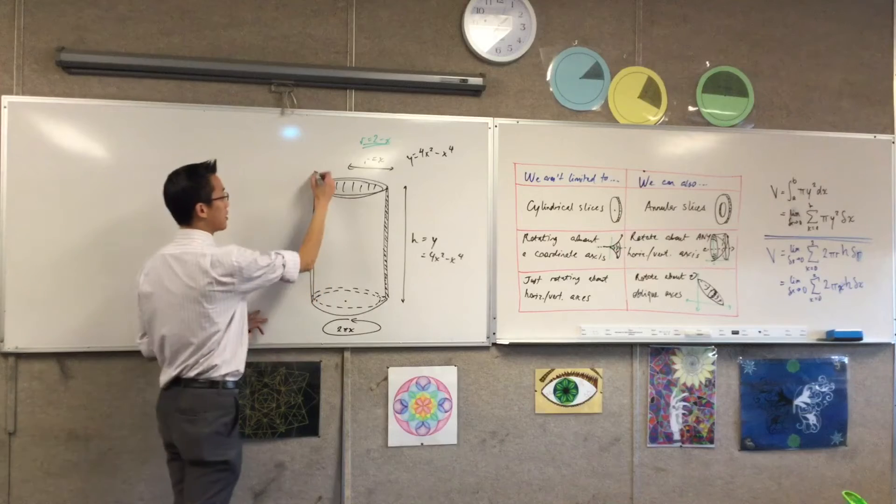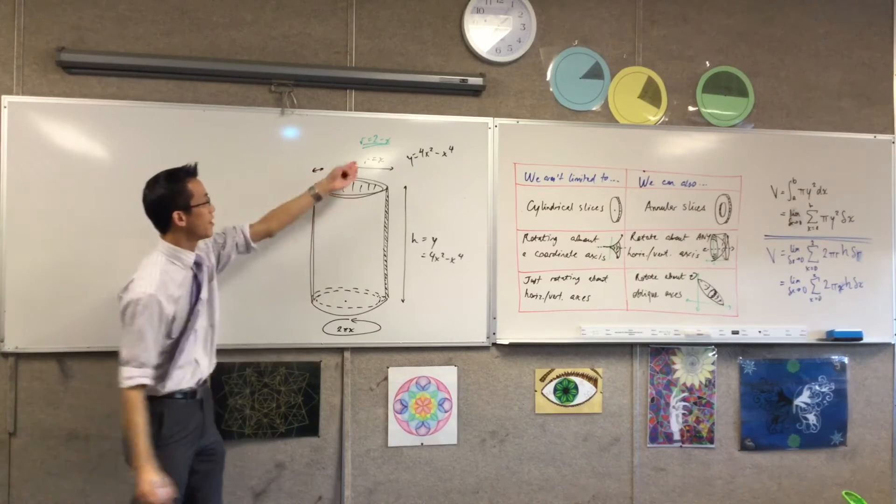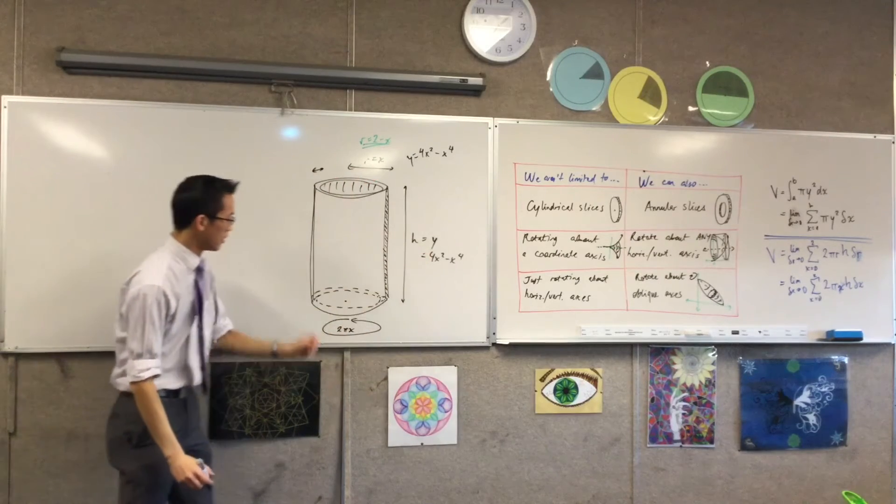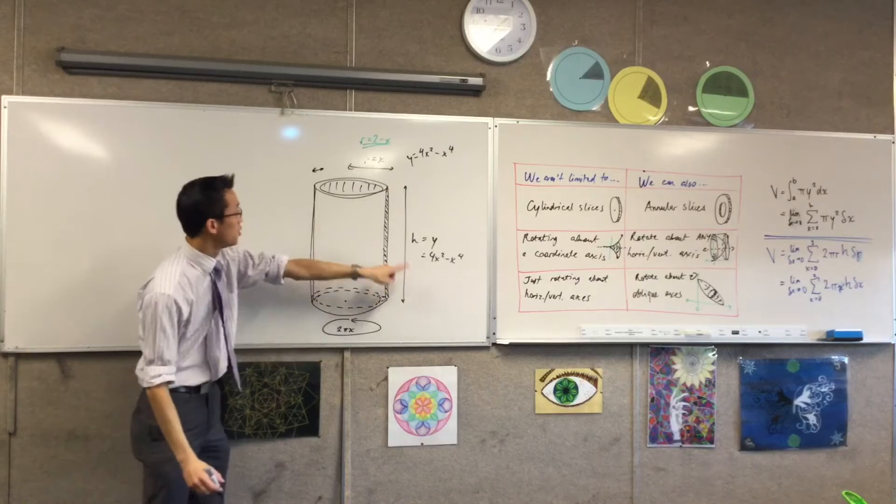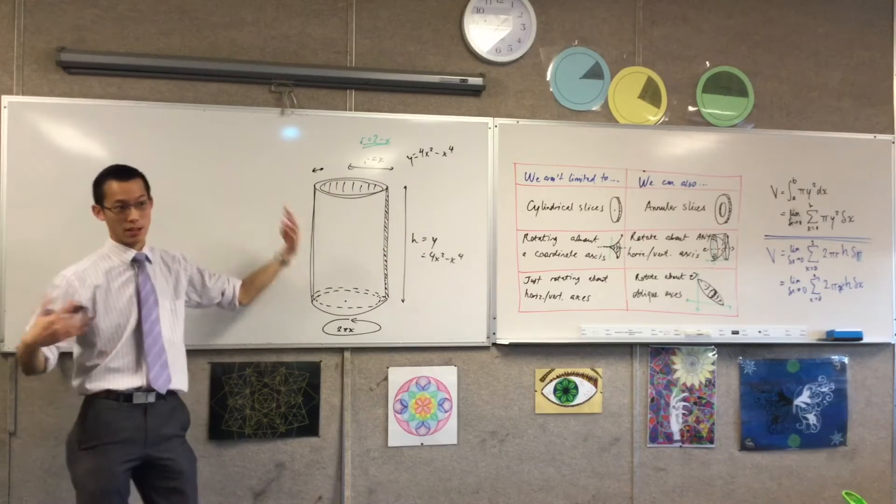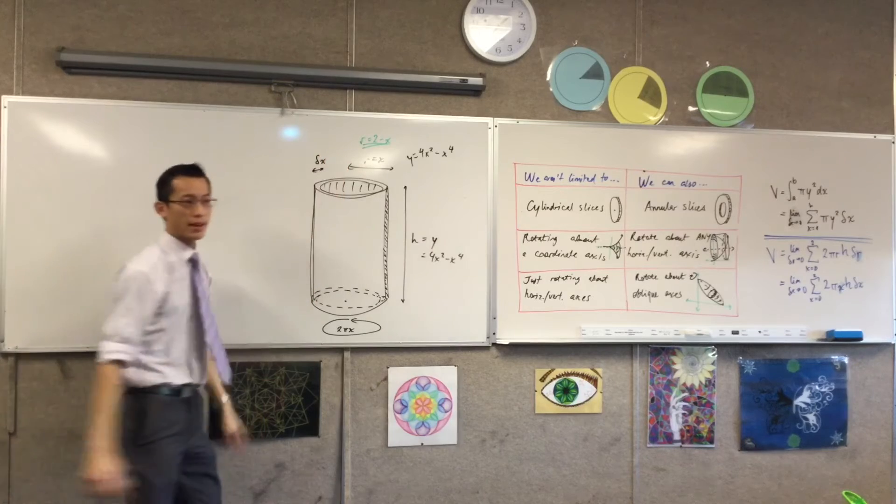Oh, I told a lie. One more piece. It's a volume. So I had one, two, a third quantity because it's a three-dimensional thing. Namely, in this case, delta x.